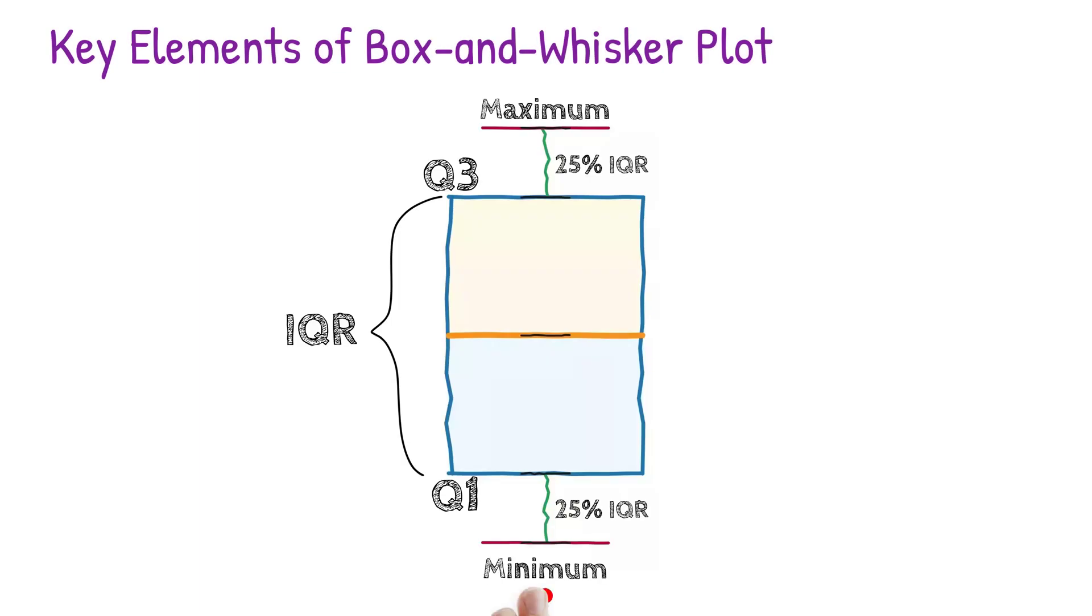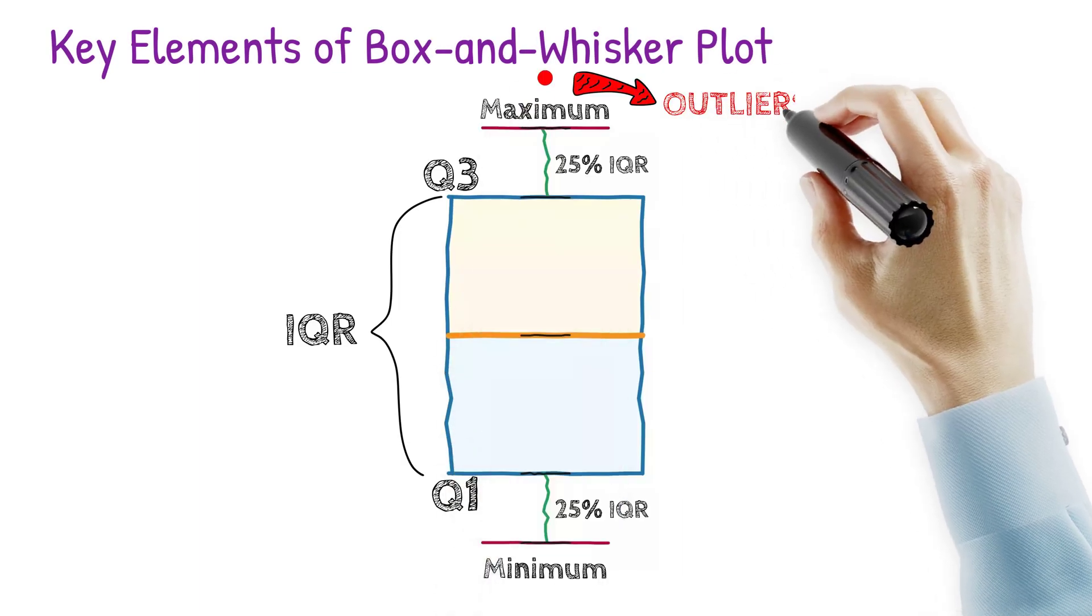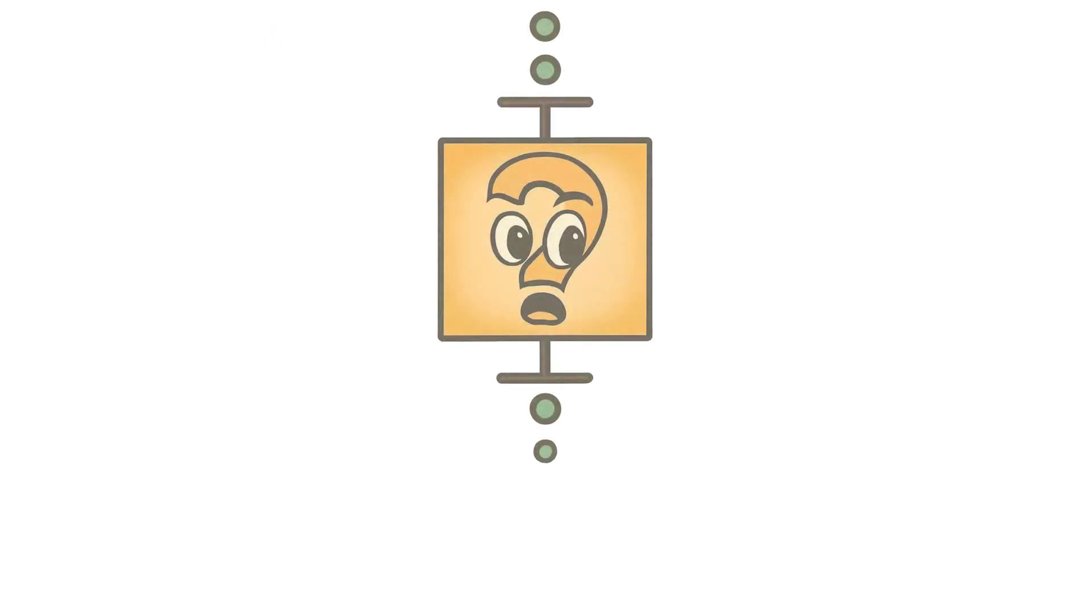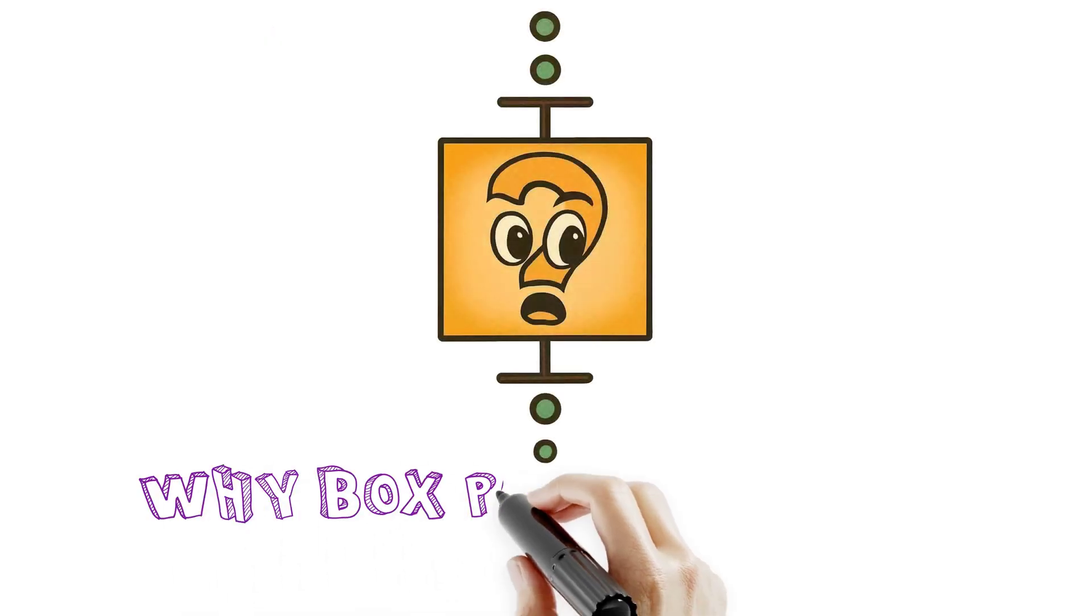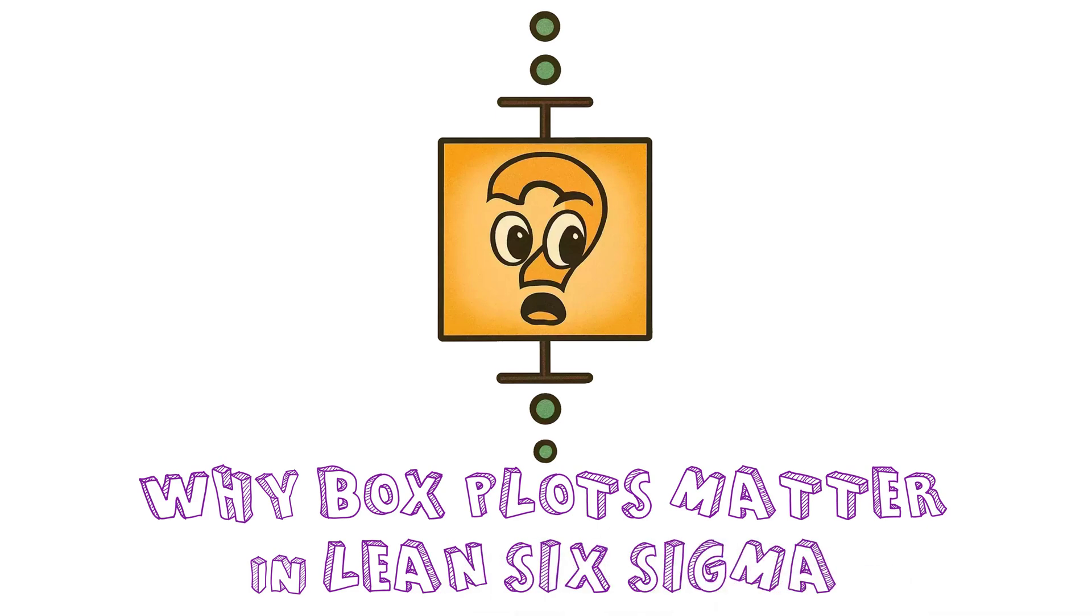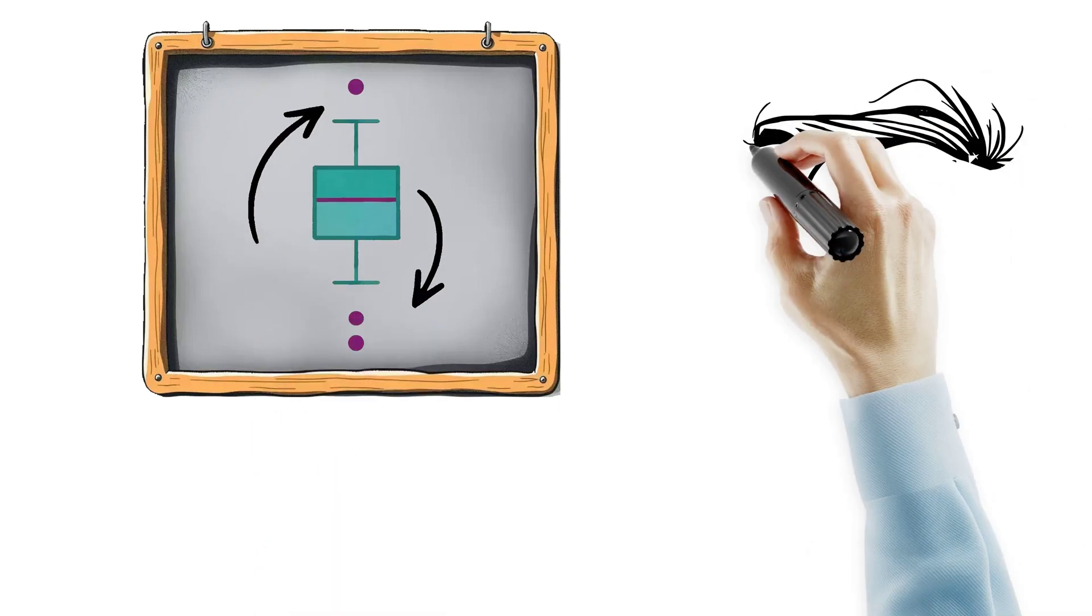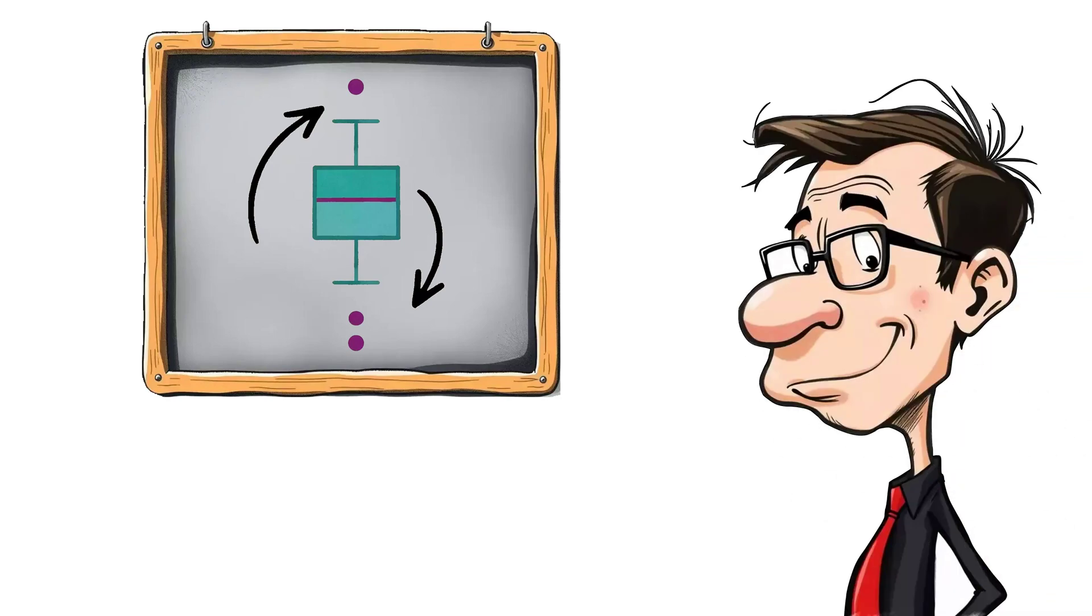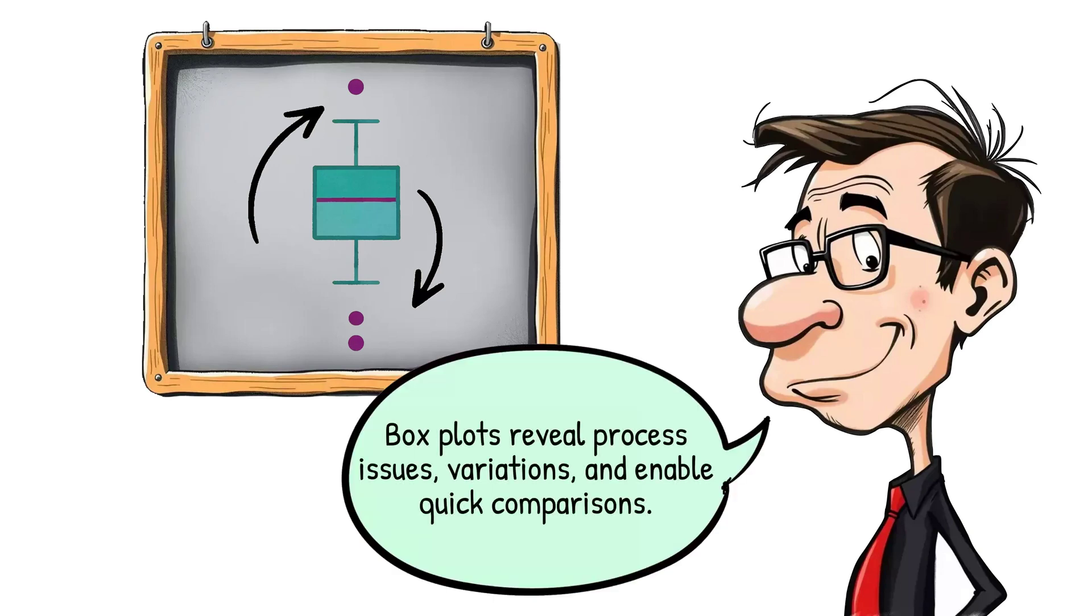Outliers: Any data points outside the whiskers are marked as potential outliers. In Lean Six Sigma, box plots help you quickly identify variations and spot anomalies that could indicate issues in your process. They're great for comparing data across multiple processes, machines, or shifts.